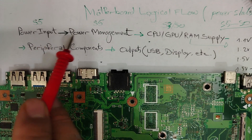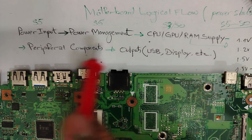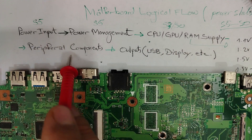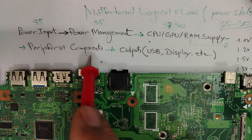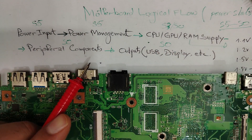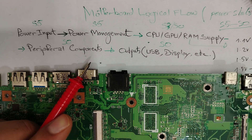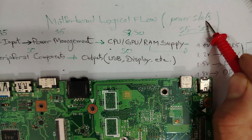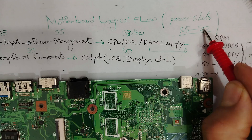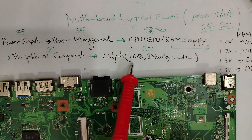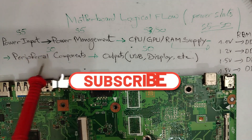We have now checked the power input test point, the power management test point, and the CPU, GPU, and RAM supply test points. After all these voltages are present, we move to peripheral component voltages. At this stage we are in the S0 state. By understanding this flow chart you can predict where signals must travel and where voltages should appear.